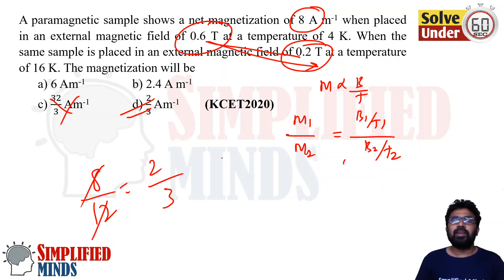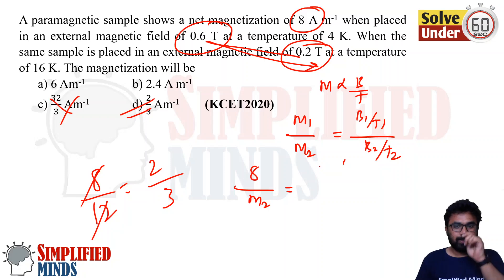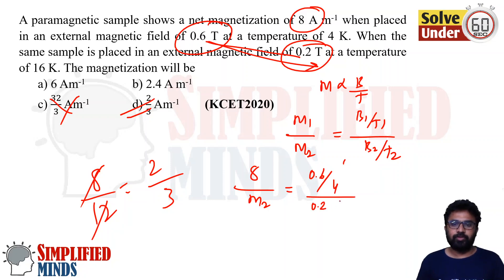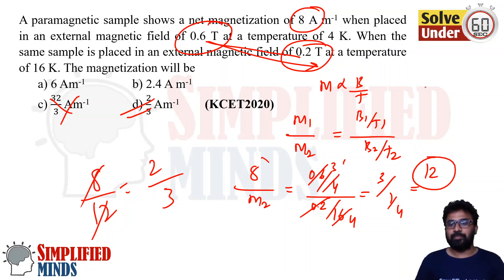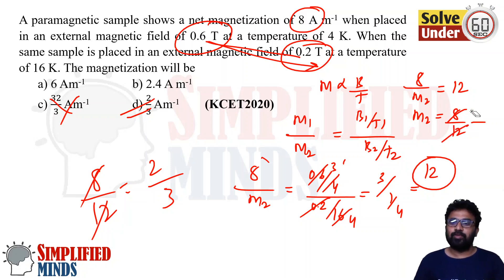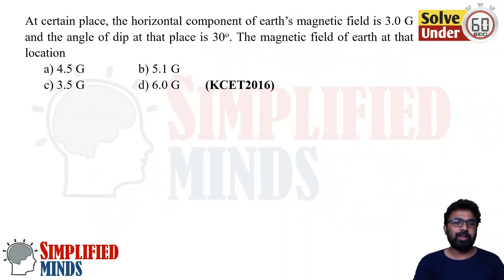Plugging in: 0.6 divided by 4, over 0.2 divided by 16. The 0.2 cancels to give a factor of 3, and 4 over 16 gives 1/4, so overall you get 3 divided by (1/4) = 12. Therefore 8 by M2 = 12, giving M2 = 8/12 = 2/3. This was asked in KCT 2020. Very simple.